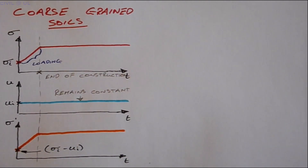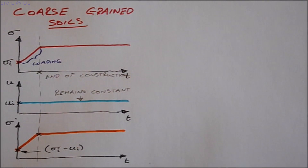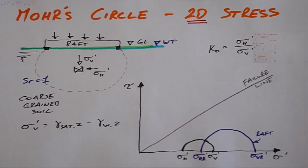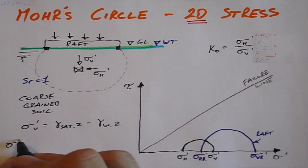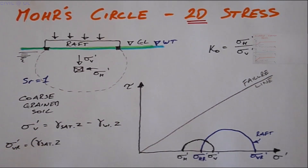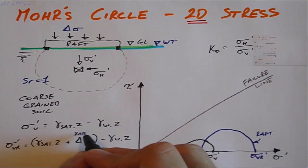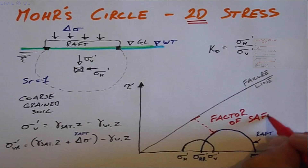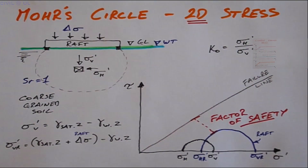The grains settle into a denser and stronger configuration — this is therefore referred to as the drained or effective stress condition. The effect of vertical stress on the soil element changes from the at-rest condition accordingly. Note again that the Mohr's circle at the end of construction remains well away from the line defining failure, its distance away being a measure of the foundation's factor of safety.